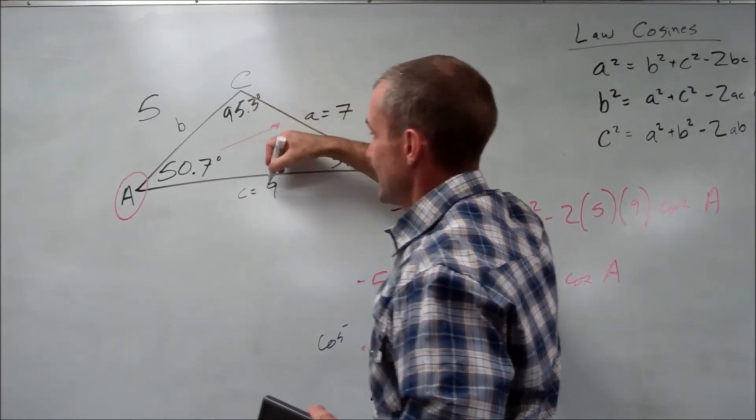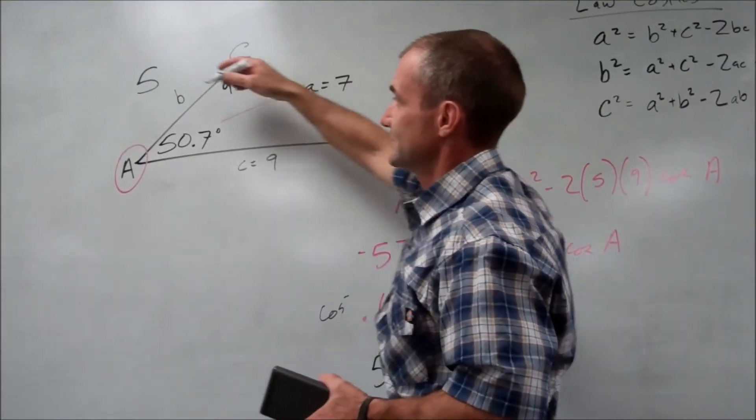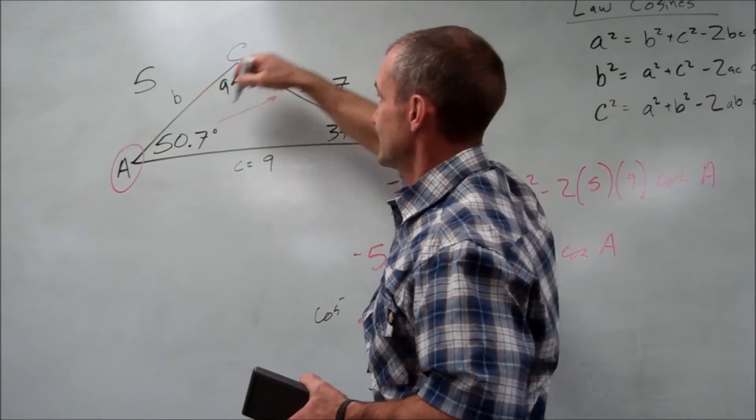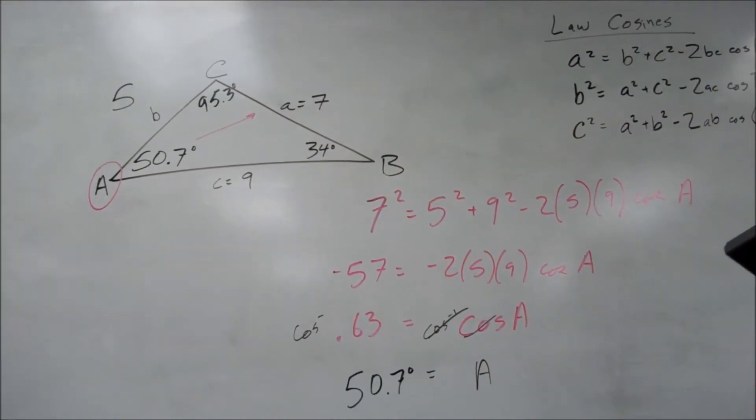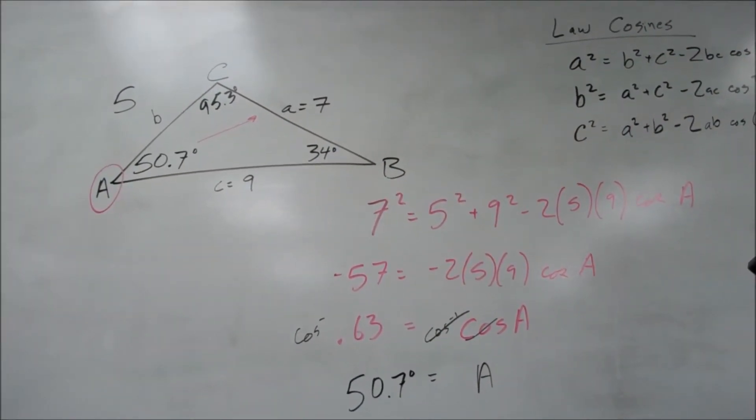Largest angle, longest side. Smallest angle, shortest side. Medium angle, medium side. So you can find sides or angles using the law of cosines.